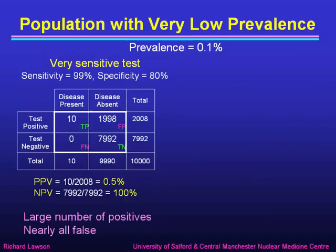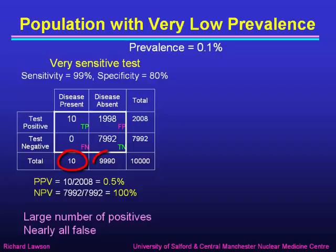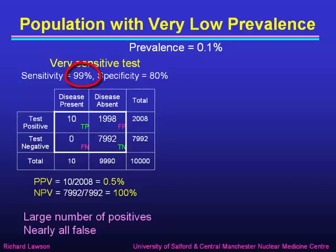Let's look at a population with a very low prevalence — 0.1%. So very few patients actually have anything wrong with them. With 10,000 patients, a prevalence of 0.1% means 10 of them will have the disease, whereas 9,990 will not. With figures of 10 true positives and 7,992 true negatives, that gives a very high sensitivity of 99% and a moderate specificity of 80%.